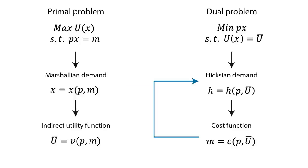By differentiating the cost function with respect to p, we get the Hotelling or Shepard's Lemma, which can be used to obtain the Hicksian demand function from the cost function.